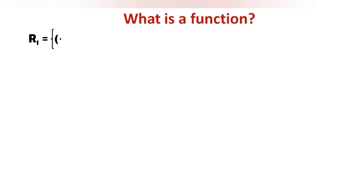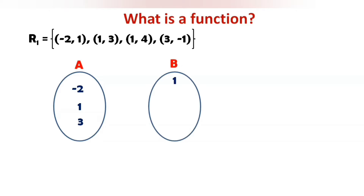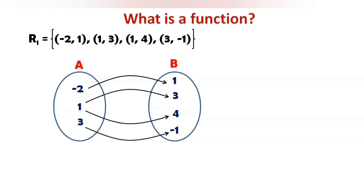Let us consider relation R1: {(-2, 1), (1, 3), (1, 4), (3, -1)}. Let us take all x coordinates as set A and all y coordinates as set B, and show the mapping between them. Minus 2 is mapped to 1, 1 is mapped to 3, 1 is again mapped to 4, and 3 is mapped to minus 1.